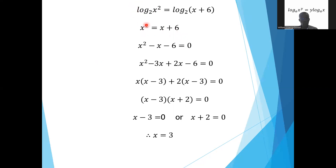Once the coefficient is 1, we can clear the logs. So we have x squared being equal to x plus 6. Now I want to get all the values on one side. We subtract x from both sides and subtract 6 from both sides, giving us x squared minus x minus 6 equals 0. Now we have to factorize this quadratic equation.